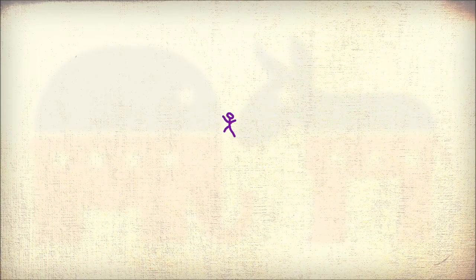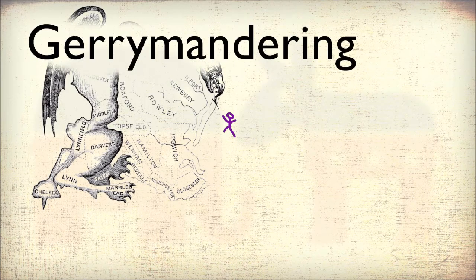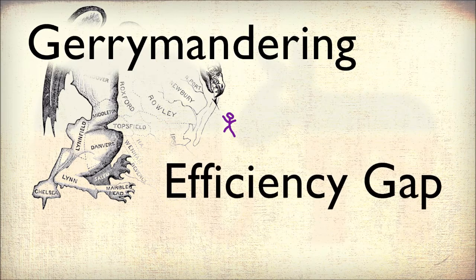If you've been following gerrymandering at all over the past few years, you've probably heard of the efficiency gap. The efficiency gap has become a popular way of measuring gerrymandering, or otherwise stated, telling you how fairly you are represented in your state's legislature.